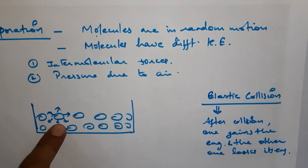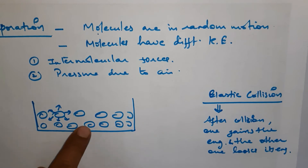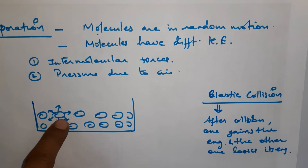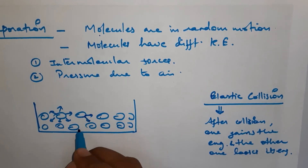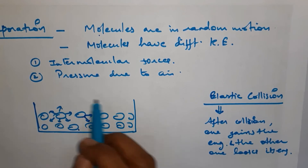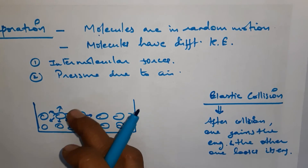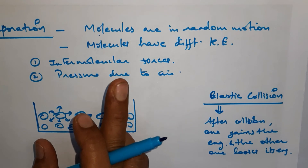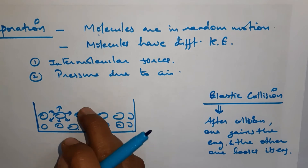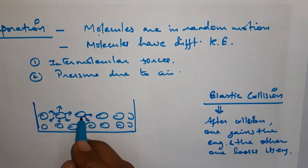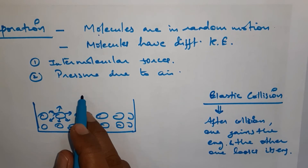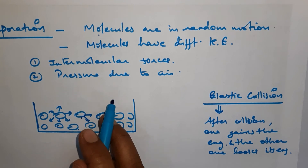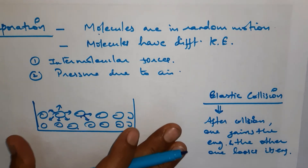Some molecules which gain enough energy after collision overcome the intermolecular forces between them, and also overcome the air pressure exerted by the surrounding air. After overcoming these two forces, these particles escape into the air in the form of vapor. They break the bonding between the particles, move into the air, and this is how evaporation takes place.